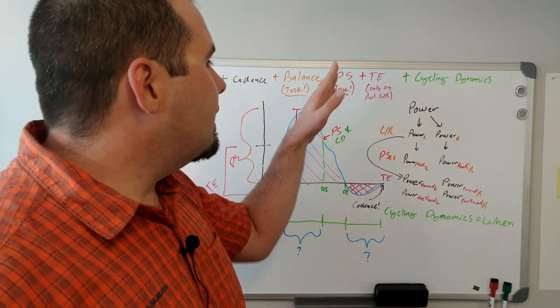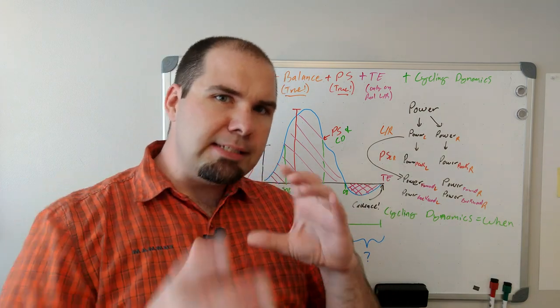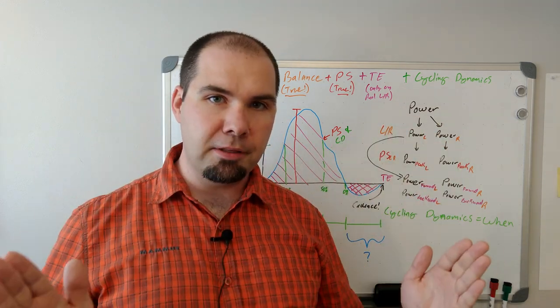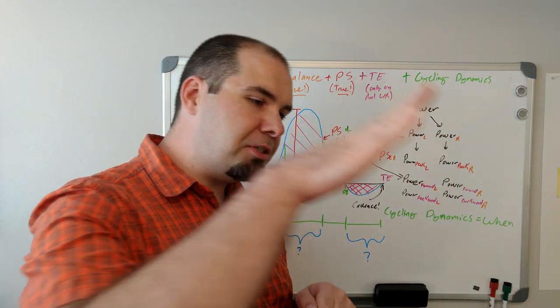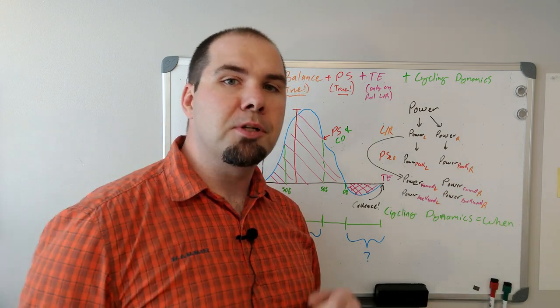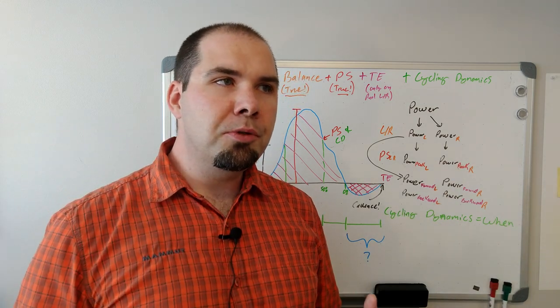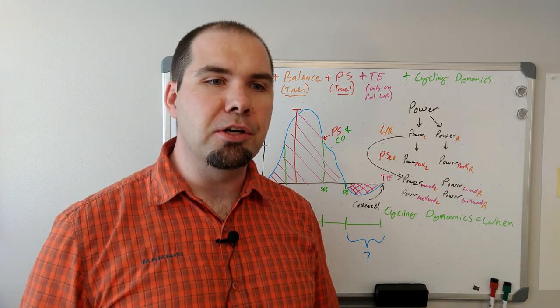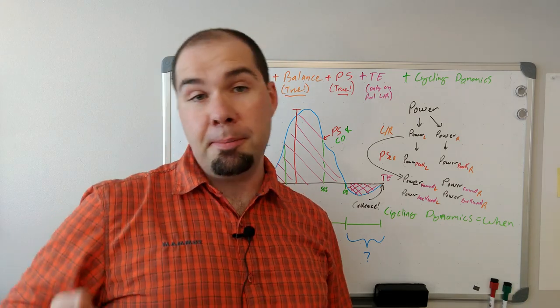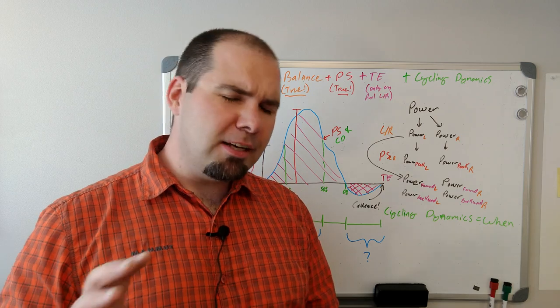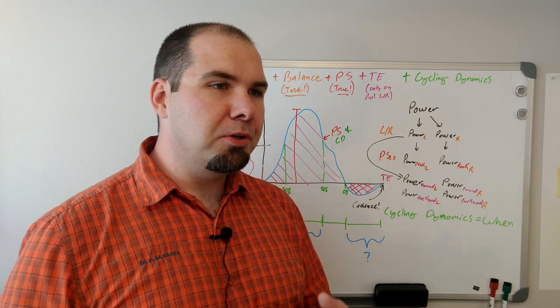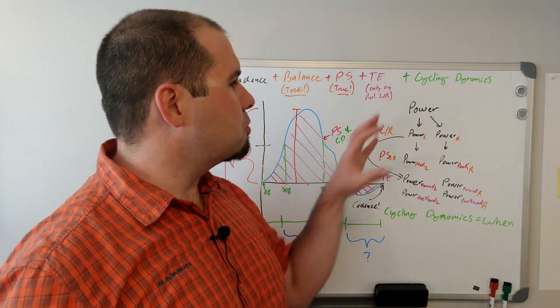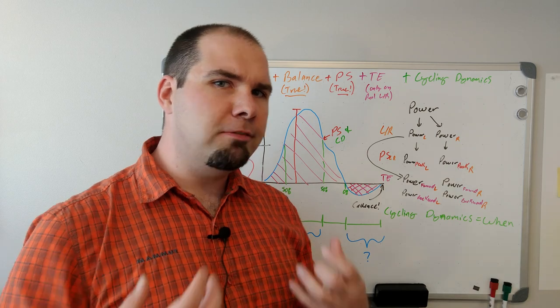They were using the balance and these metrics to actually kind of disassemble the power data because they could take the power, they could split it into the left and the right, then they could figure out how much is pushing down and how much is being lost on the upstroke. So you could do things like, in theory, instead of training to increase your downstroke, you could train to increase your upstroke, in theory. None of this has really been proven out, so you could get the same wattage gains on your FTP by improving efficiency. And that's what these metrics were kind of trying to get at, is trying to show you efficiency.